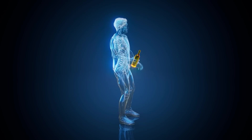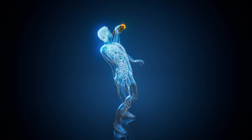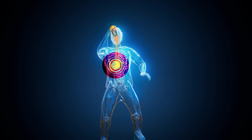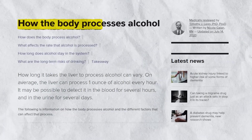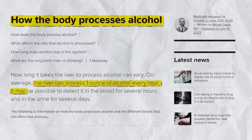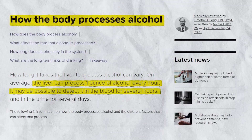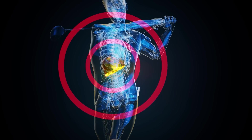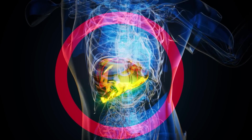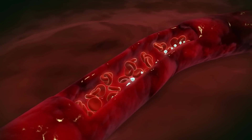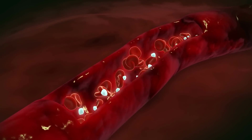Once in the body, your body starts trying to get rid of it immediately. This primarily happens in the liver. The liver can only process a certain amount of alcohol per hour, roughly the equivalent of one standard drink. So if you consume alcohol faster than this, your liver can't metabolize it, and the excess alcohol circulates in your bloodstream, leading to intoxication.